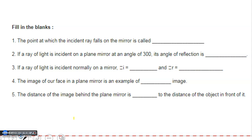First we have the fill in the blanks. First question: the point at which the incident ray falls on the mirror is called the point of incidence.